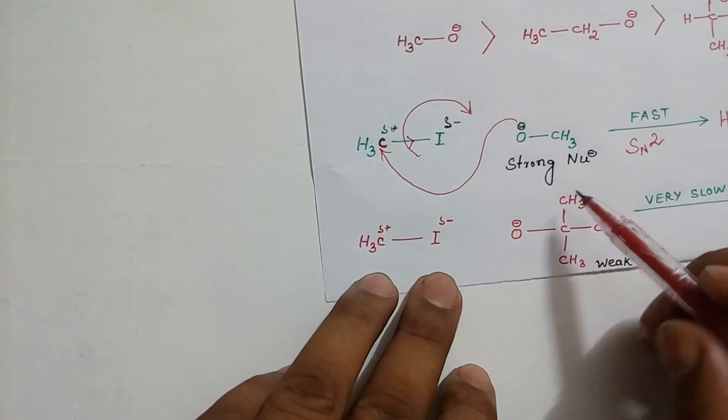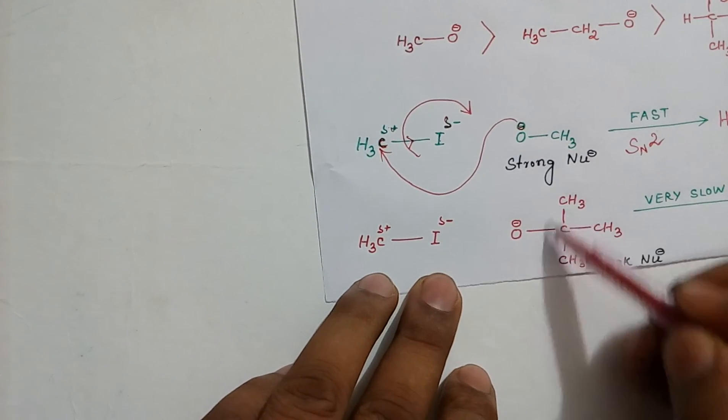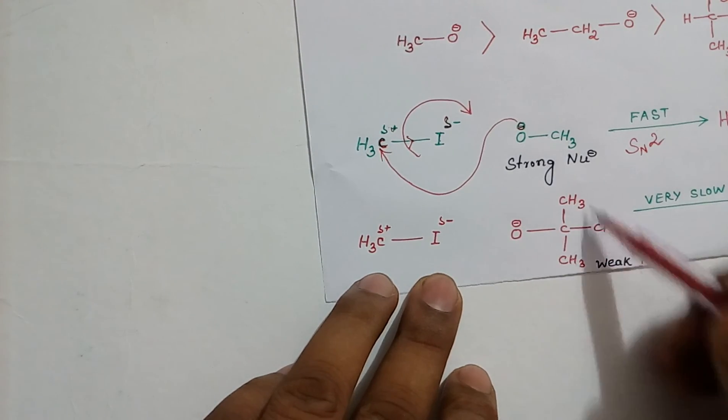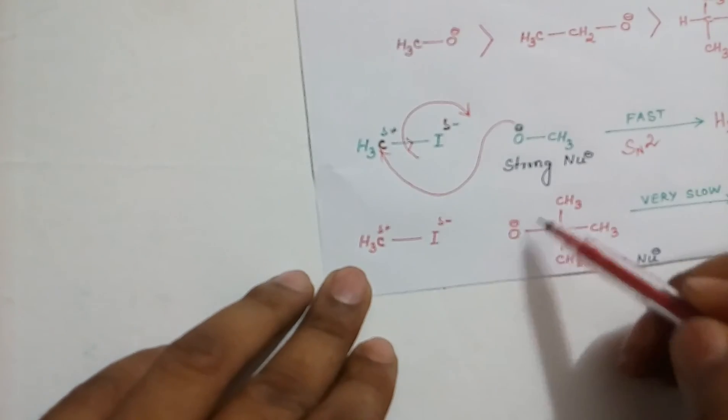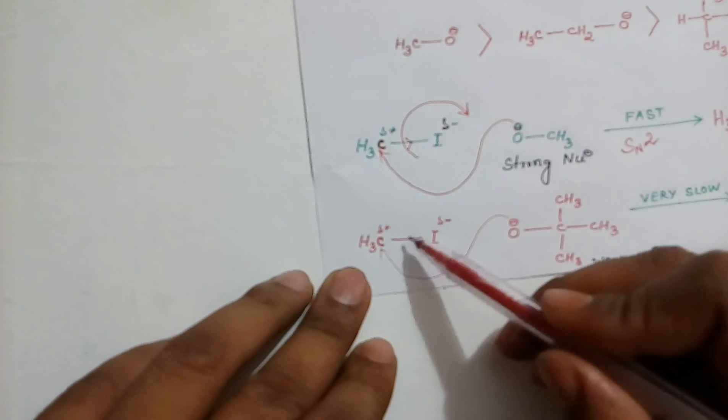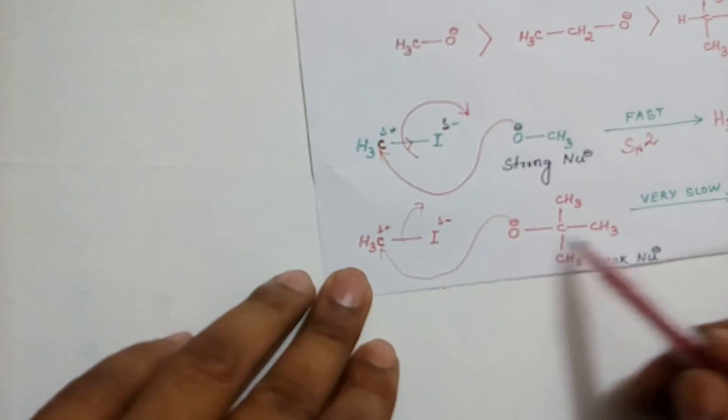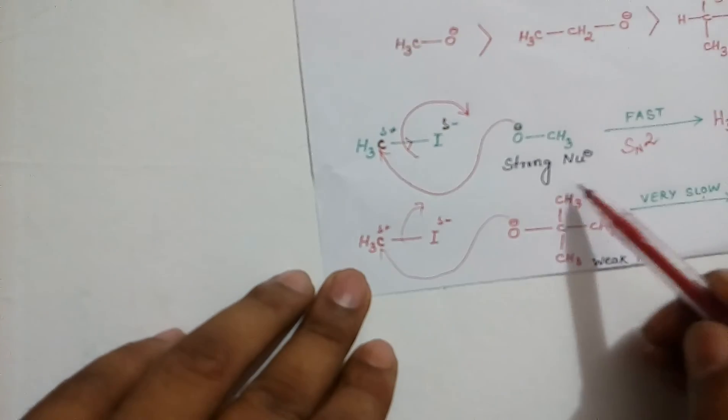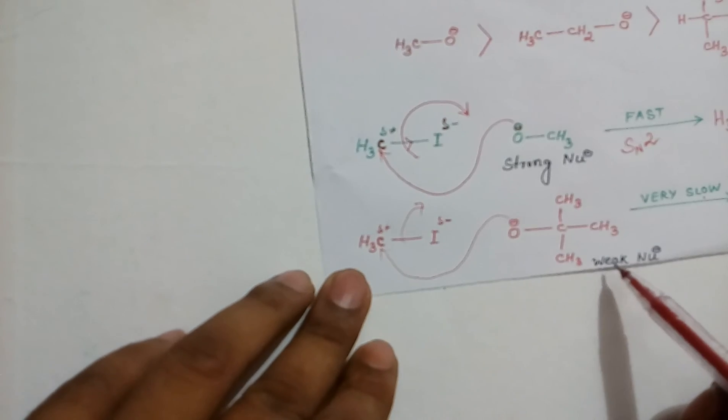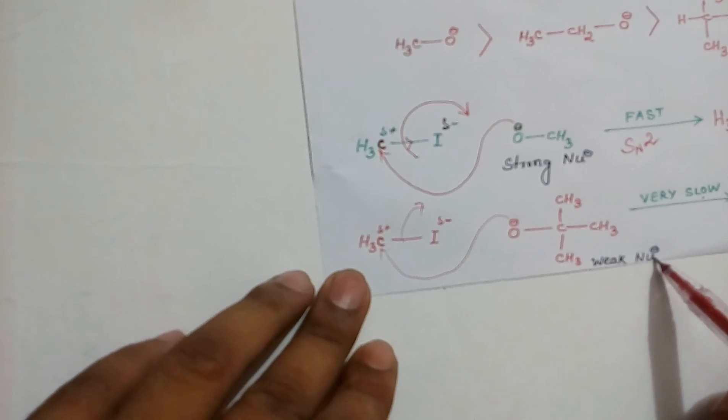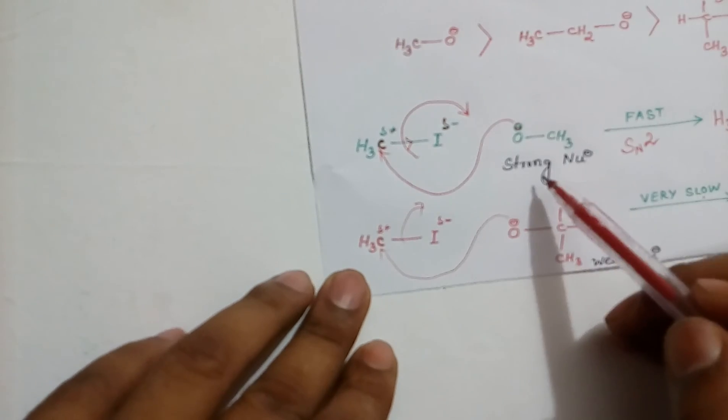But compared with this, tertiary butoxide, this group is bulky. So, it faces hindrance to attack, to approach this carbon. In this case, the reaction takes place very slowly because this group is bulky. So, it is weaker nucleophile. And methoxide is strong nucleophile. Thank you.